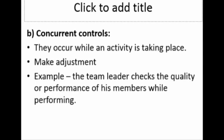The second type of control is concurrent control. Concurrent control is taking control while the activity is taking place. In other words, concurrent control is exercised during the operation of a program or during an event. This provides corrective actions and adjustments so that we will be able to get the desired results, or to ensure that no major damage is done to the output.